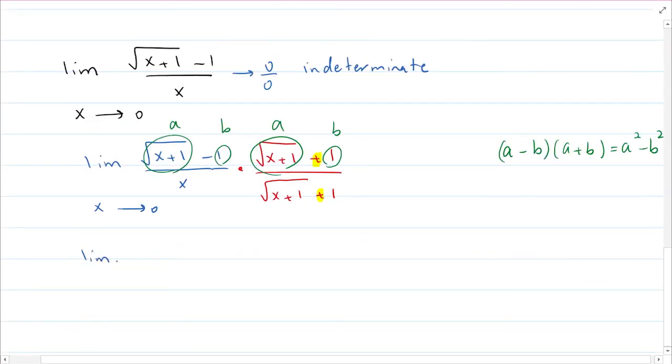So now if I use that identity, I get limit of the first term to the power of 2, so that just takes away that root, minus b to the power of 2, which is just 1 squared, that is 1, over x multiplied by square root of x plus 1 plus 1 as x approaches 0.